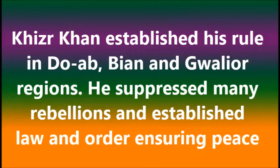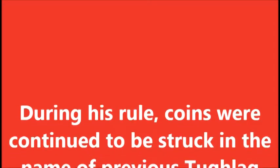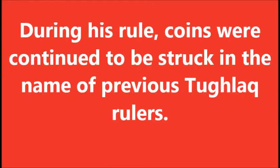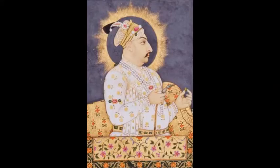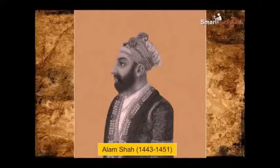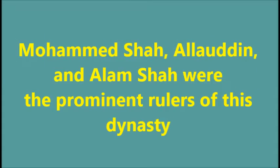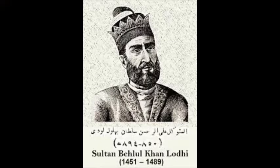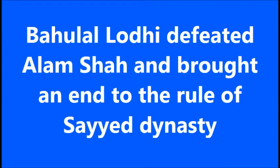Khizr Khan established his rule in Doab, Bayan and Gwalior regions. He suppressed many rebellions and established law and order, ensuring peace. During his rule, coins continued to be struck in the name of previous Tughlaq rulers. Muhammad Shah and Alam Shah were the prominent rulers of the Sayyid dynasty. Bahlul Lodi defeated Alam Shah and brought an end to the rule of the Sayyid dynasty.